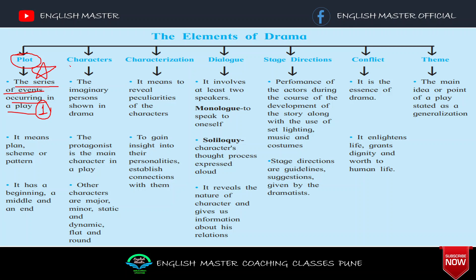The second element is Character. The exam question: what is character? Character is the imaginary person shown in drama. The protagonist is the main character in a play. Characterization means to reveal the peculiarities of the character and gain insights into their personalities, and to establish connections with them.